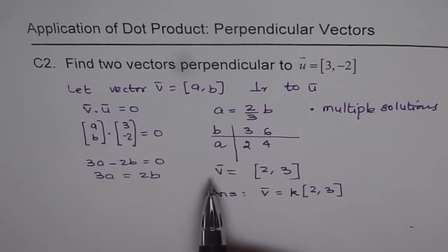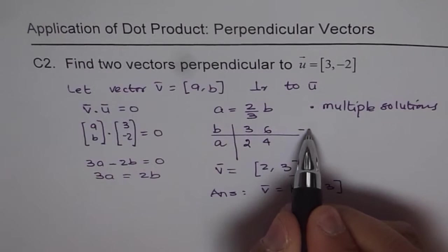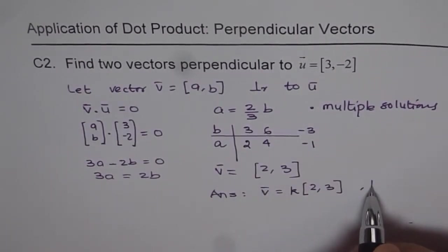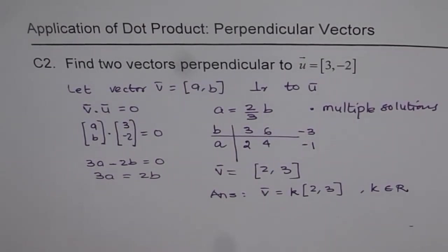We could have taken negative values also. Think about this: if I would have taken -3, then a would have been -2. So here, k actually belongs to real numbers. That becomes a very general solution for the given problem.